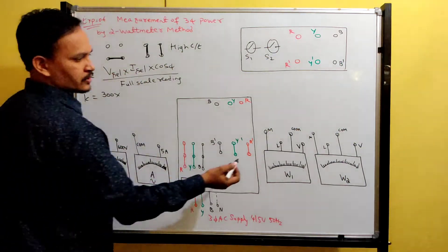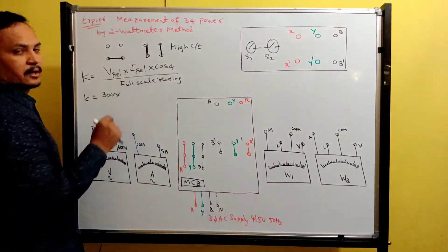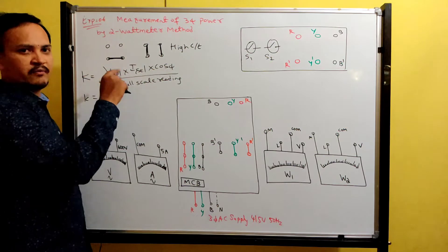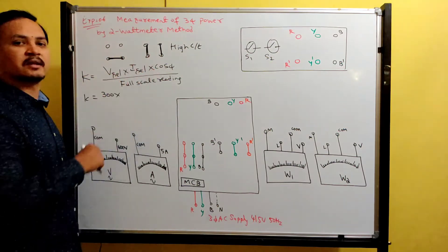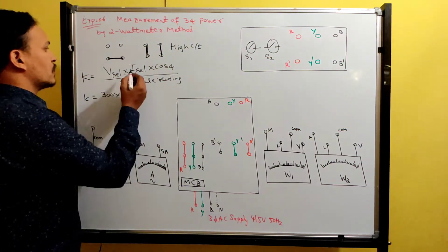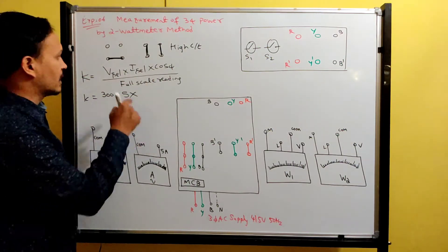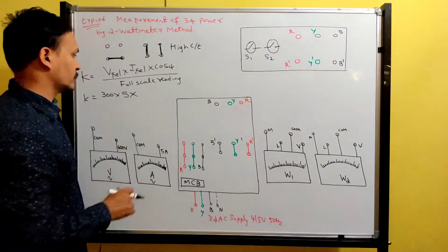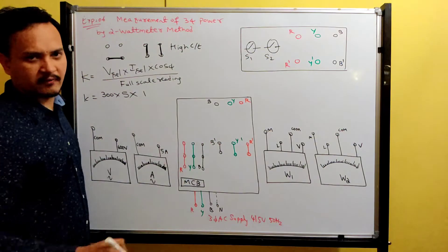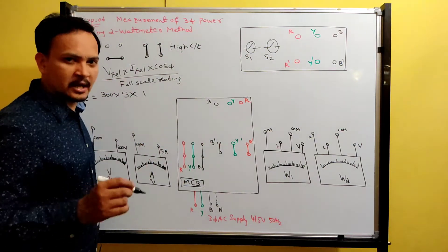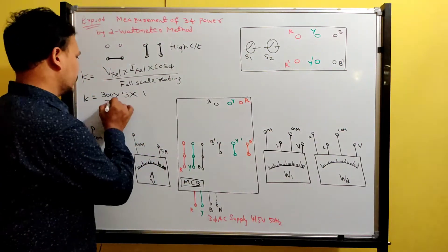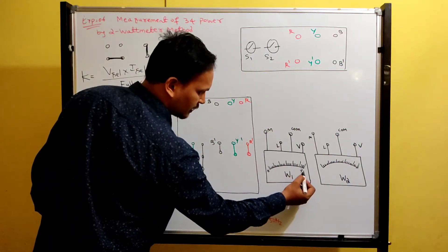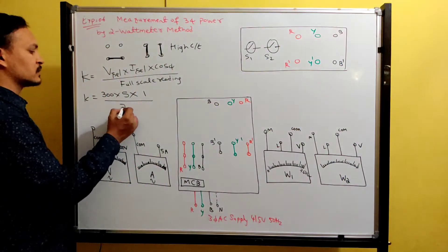Depending on how the strips are connected, select your current range — low current if strips are horizontal, high current if strips are vertical. For power factor, all wattmeters in the laboratory have unity power factor. Divide by the full scale reading — whatever it may be, such as 750 watts. Using this formula, find the constant. You may get a constant of 1, 2, 3, or 4. Both wattmeters may have the same constant or different constants. You should explain to the professor how you calculated the wattmeter constants before doing the connections.